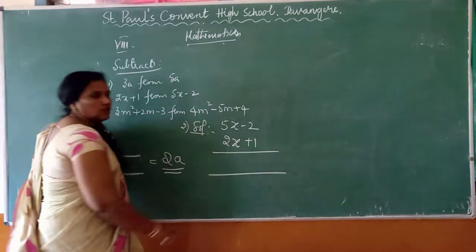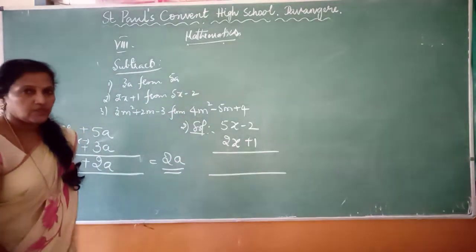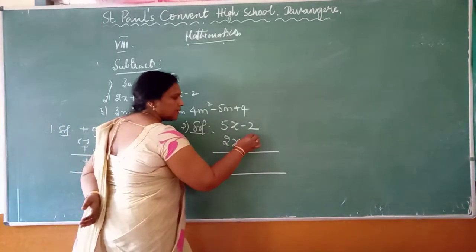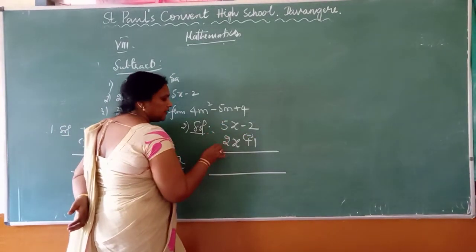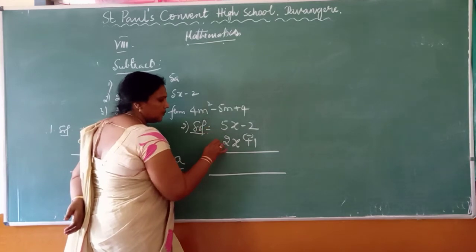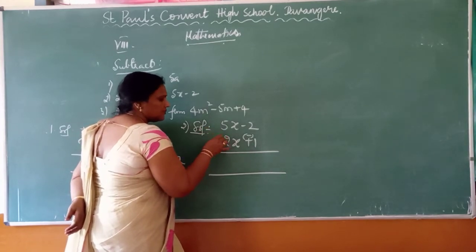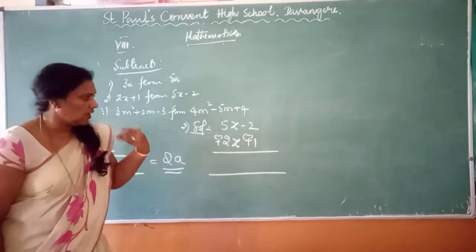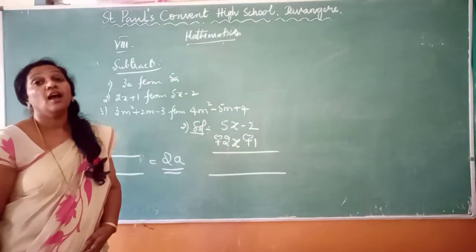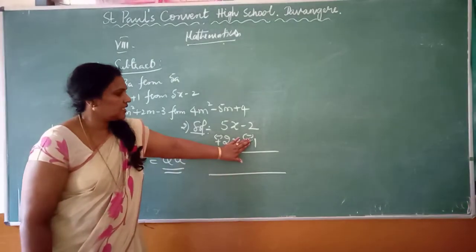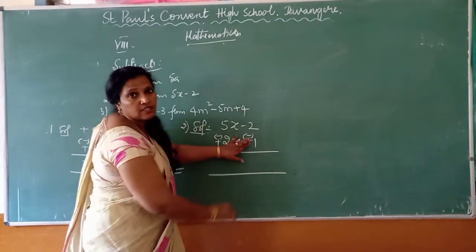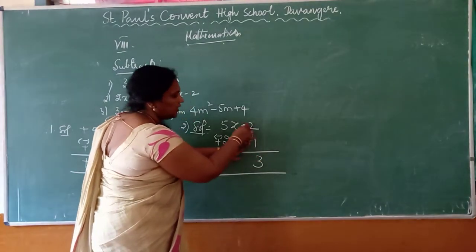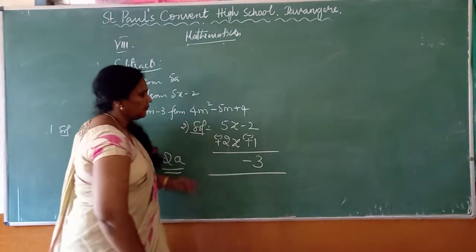After writing, what should I do? I have to change the sign of the lower expression. Plus becomes minus. Here there is something understood as plus, so plus becomes minus. After changing the sign of the lower expression, do as usual like addition. Close. When there are same signs, what are you supposed to do? Add. Two plus one is three. Greater number sign is minus.